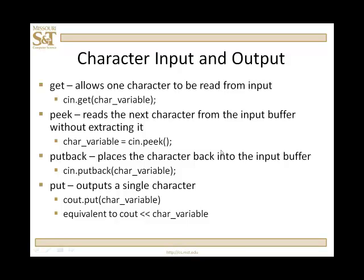There are some character input and output functions. The get function allows you to read in a single character, and it will read any character including white space. It is a member function of every input stream, so you can use it with cin or, as you'll see later, file streams. You use 'cin.get' and pass a character variable — the parameter is a reference parameter. When the function returns, that character variable has the value of the next character on the input buffer. Peek does something very similar but doesn't remove it from the buffer — it returns a copy of the next character. Putback allows you to put something back into the buffer. Put is the reverse of get, like a cout of a character variable.